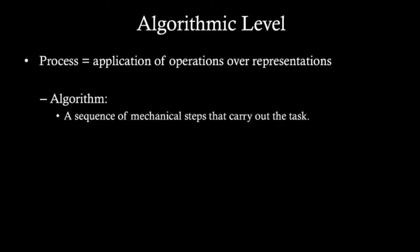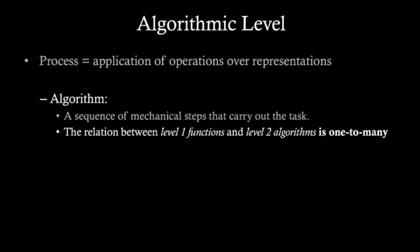The relationship between what we find at level 1, which is functions, and what we find at level 2, which is algorithms, is one-to-many. That is, to any function there correspond more than one algorithm.